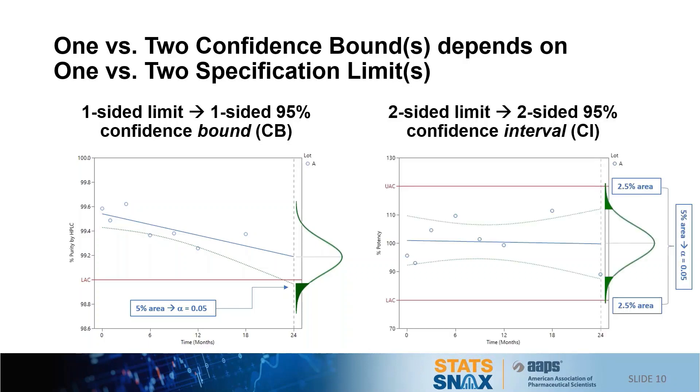For the two-sided attribute, I need to account for uncertainty in the predicted mean on both sides of the distribution. So I allocate half of the 5% total uncertainty to each end of the confidence interval, meaning that two and a half percent of the area is in each tail.